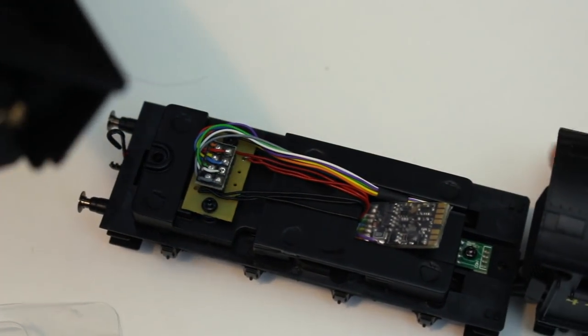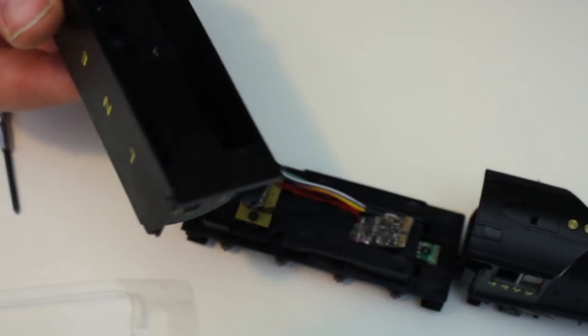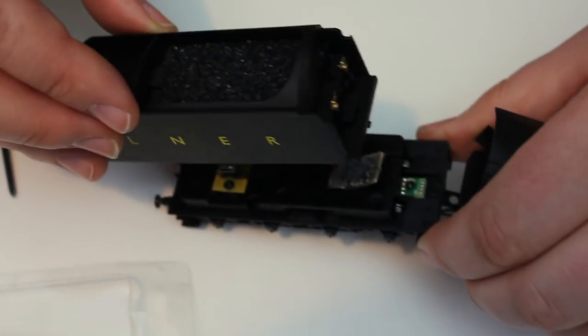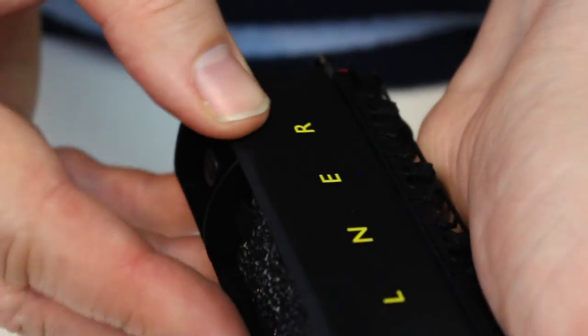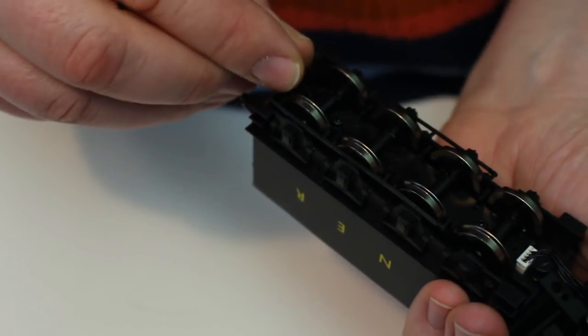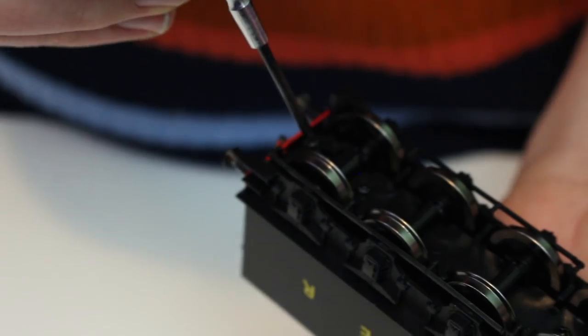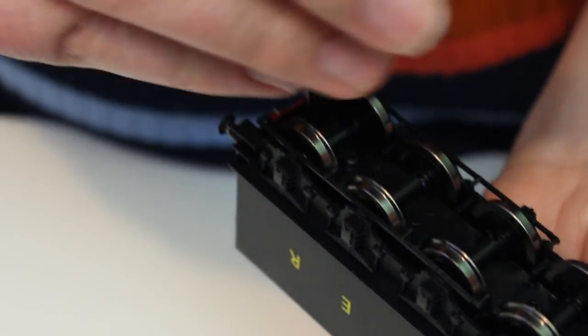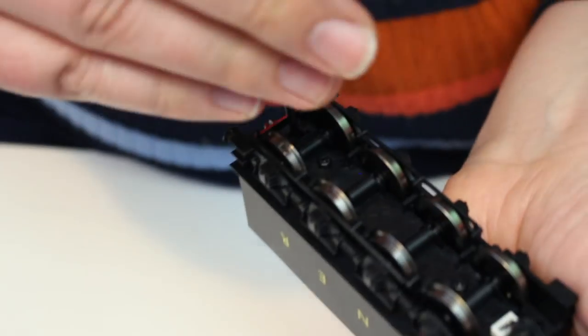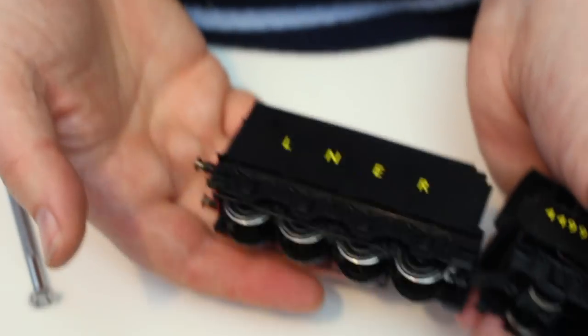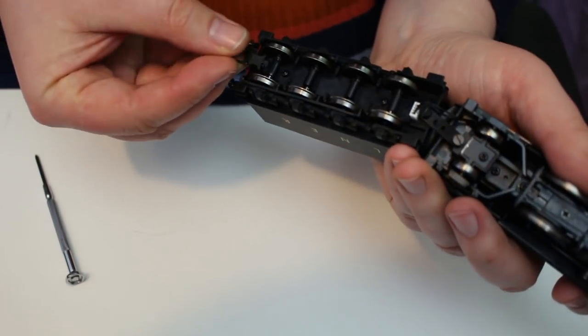As we come to put the tender lid back on there's a clip at the front. We need to make sure that that is lined up at the front and clicked in home. Once that's clipped in push the back of the tender down, make sure you don't have any wires trapped around the edges. We get our screw, drop it straight back down the hole, Phillips screwdriver down in, don't over tighten it you don't want to strip the thread and that's it. All that's left now is to fit the tender coupling back in and we are good to go.